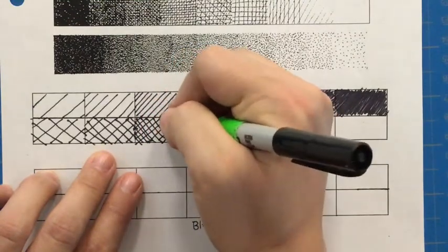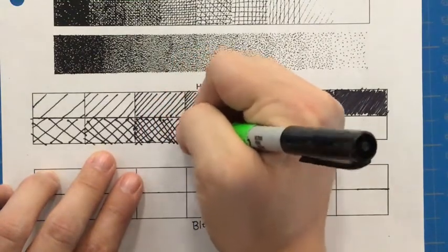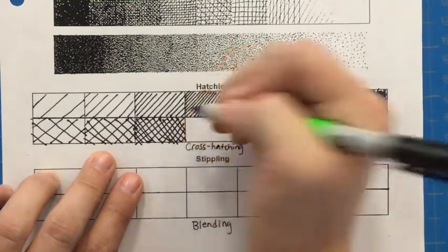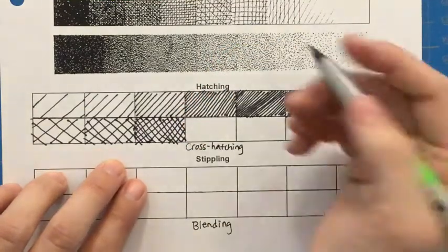Now you'll notice with this your values start to darken faster since you're using lines going two different directions.